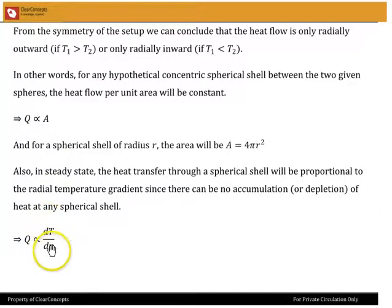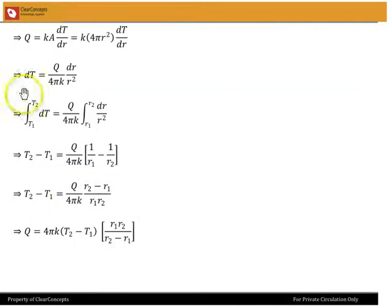So putting these two together and adding a constant of proportionality K, we get Q equals KA dT by dR, and A is 4πR². Rearranging, dT equals Q divided by 4πK times dR by R².